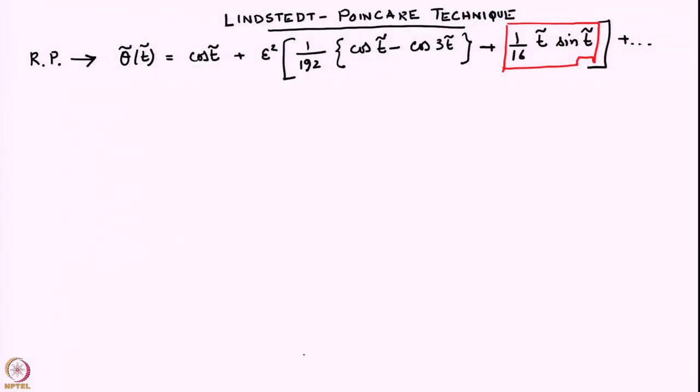We were looking at the nonlinear pendulum and were trying to solve it using a regular perturbative technique. Using that technique, we found that the expression for the angle of the pendulum as a function of time has a secular term, as indicated in the red bracket. This term causes the expression to become invalid at large times. There also exist other techniques using which we can rectify this behavior. This behavior essentially arises because the frequency of the pendulum depends on the perturbation amplitude — in this case theta_0, the initial angle from which the pendulum is released. Now let us look at an alternative technique which will correct this behavior and give us an expression that will not become arbitrarily large at large times.